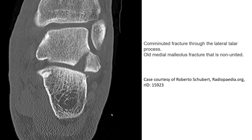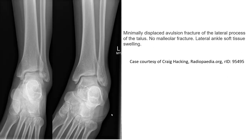This is another case of a comminuted fracture through the lateral talus process. As we can see clearly, the fragmentation is displaced laterally. This is another example of a lateral talus process fracture where we can see the lucency line across the lateral process, best appreciated on the frontal view and the oblique view.